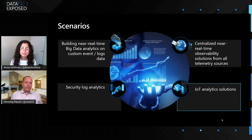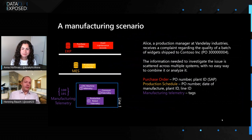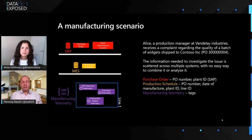Let's think about a manufacturing scenario where Alice, a production manager at Wanderlei Industries, receives a complaint regarding the quality of a batch of widgets shipped to Contoso. The information she needs to investigate is scattered across multiple systems with no easy way to combine or analyze it — data from an ERP system such as purchase orders, data from a manufacturing execution system such as the production schedule, and a ton of telemetry data coming from all different machines on the production line.